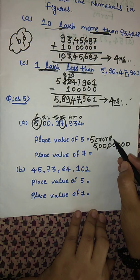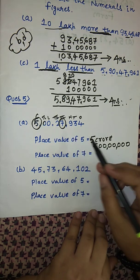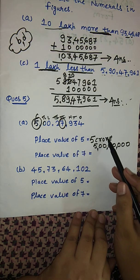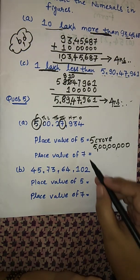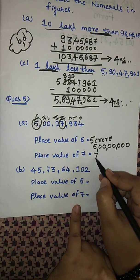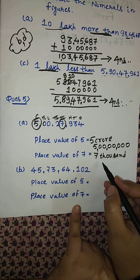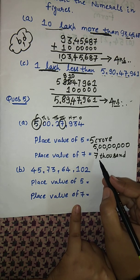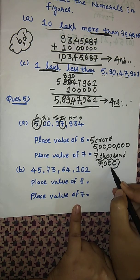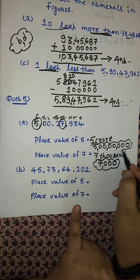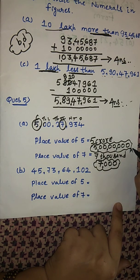If the question says 'write the place value of a given digit', you have to write it in both forms. Seven is situated at the thousands place, so the place value of seven is seven thousand. In figures, the place value of seven is 7,000 and the place value of five is 5,00,00,000 — that is, five crores.